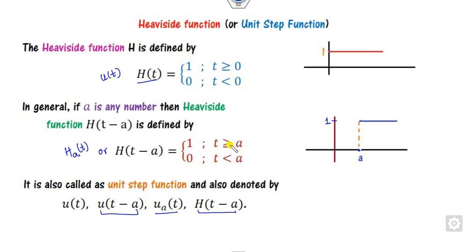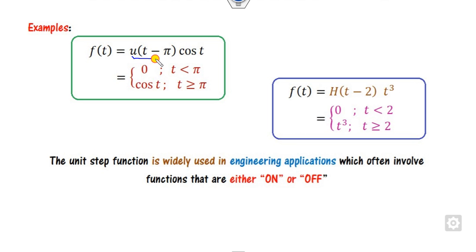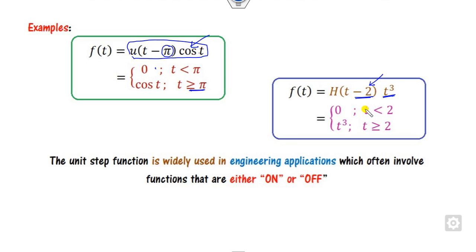How do you write a function in terms of the unit step? For example, whenever the value is greater than or equal to π the answer is cos(t), otherwise 0. Similarly, whenever the function value is greater than 2 it is t³, otherwise 0. It is just like an on/off switch, as we see in our day-to-day lives.